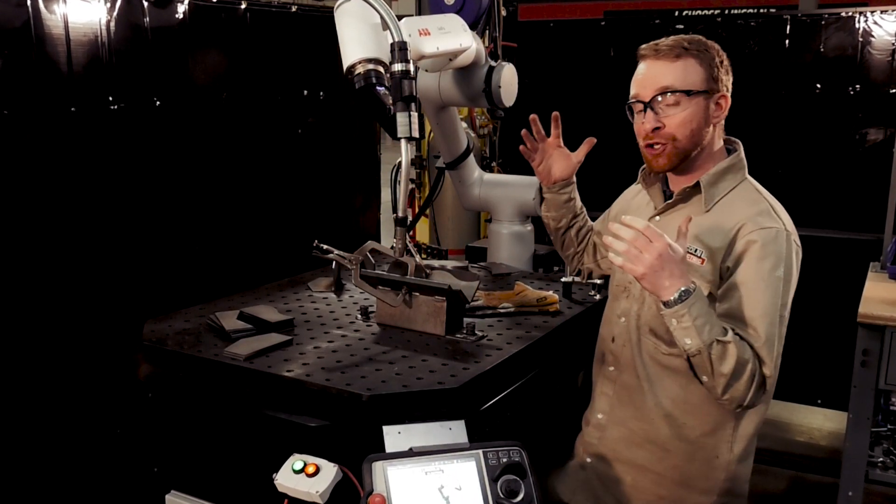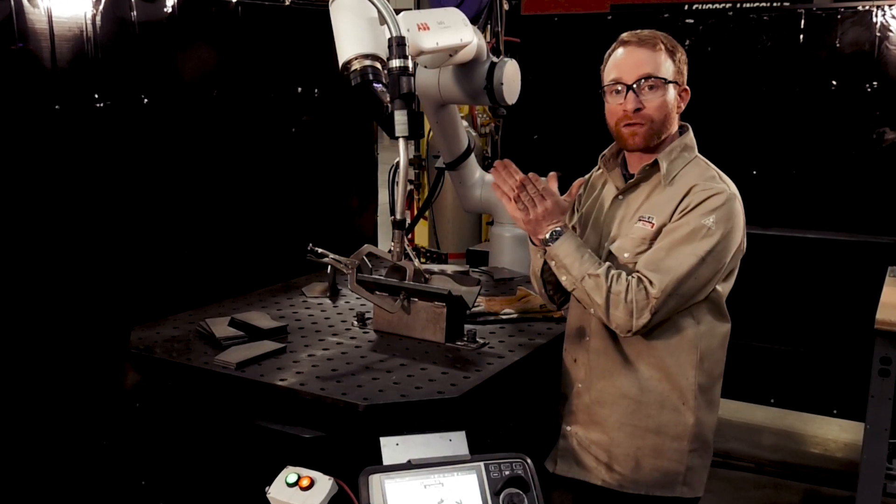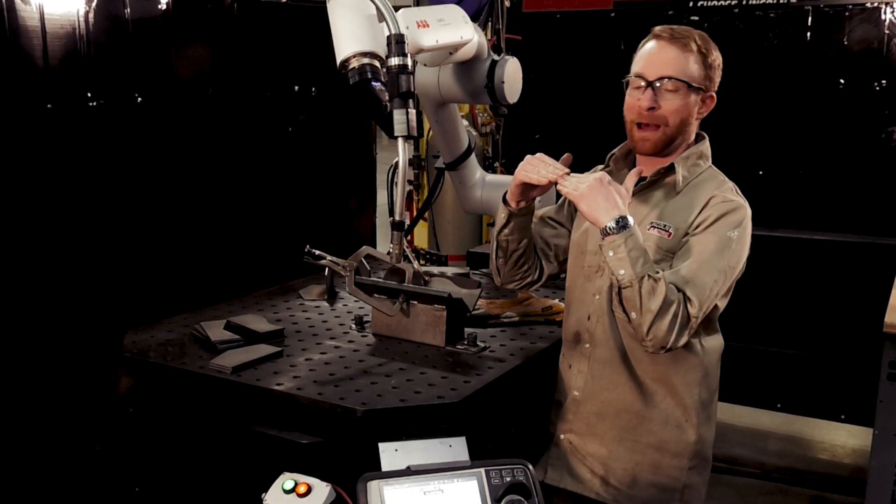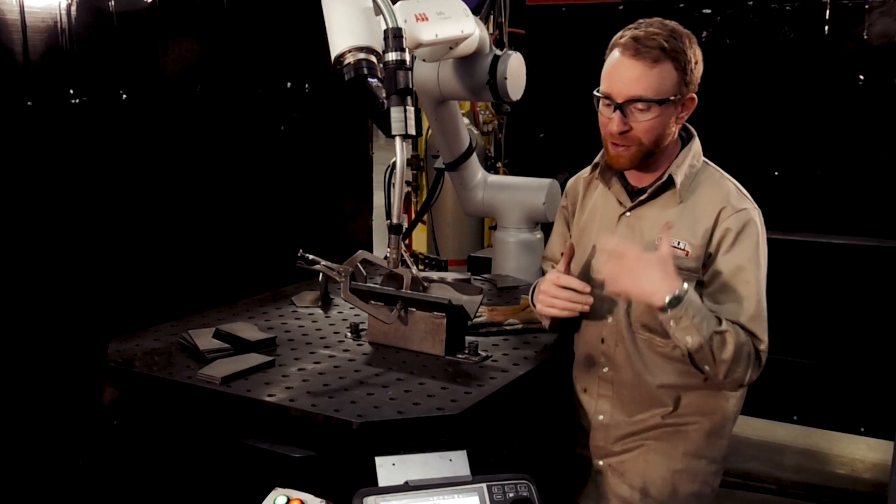First thing we're going to do is just do a regular linear weld. Now, this does have to be in a V-groove or something like that. It can't be like a lap joint or anything like that. We've got to make sure it doesn't melt off the edge of the weld itself.